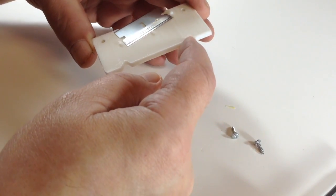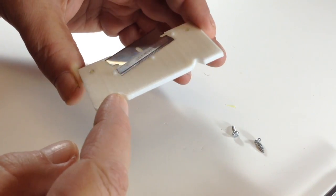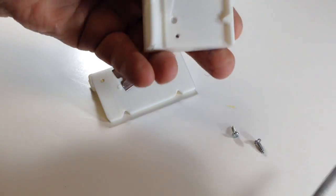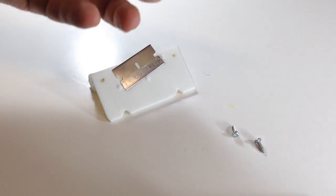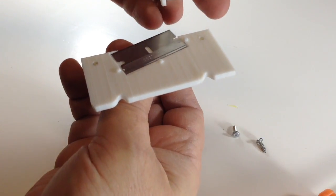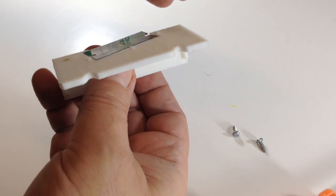You'll notice there's two notches here. Those two notches correspond to two bumps right here on the upper half. So all you have to do is line up the two bumps with the two notches here.